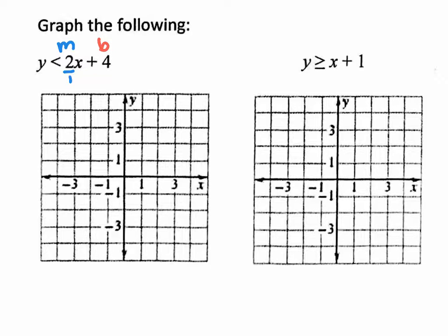So this does cross at 4 right here. From that point, I need to go according to the steepness of the slope, which means positive 2 over 1. If you go positive 2 over 1, you're going to be off the graph, but let's put a dot out here off the graph anyway.